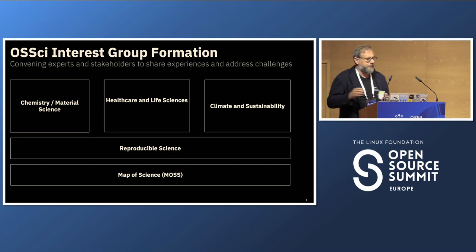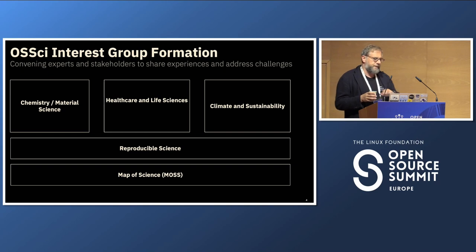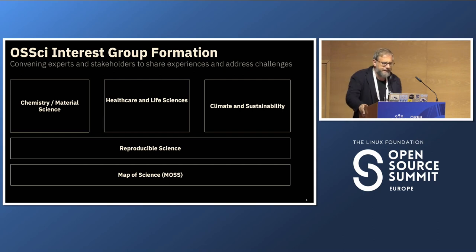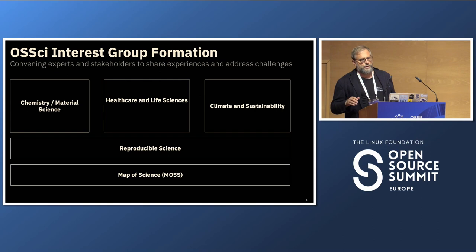These are the interest groups we have so far: chemistry, material science, healthcare and life sciences, and climate sustainability — reflecting IBM's priorities in research, with others welcome to stand up their own groups. We also have horizontal groups spanning technology, including reproducible science. We sponsored the first ACM conference on reproducibility, held in June at the University of California, Santa Cruz. And another interest group is Map of Science.